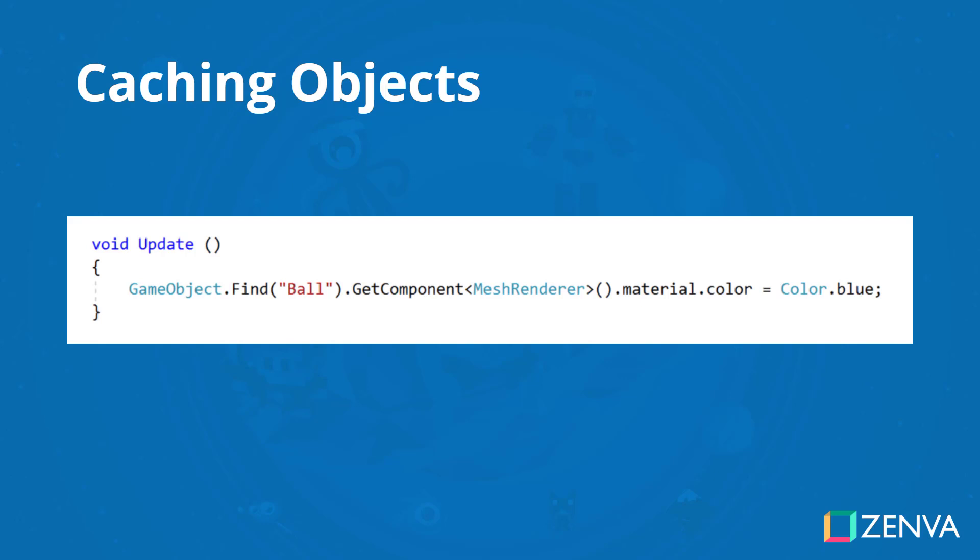This is a very expensive line of code, and when I say expensive, I mean that it is using a lot of processing power and it takes quite a long time to run in terms of a function. What we can do is actually cache the mesh renderer component of the ball, instead of having to find the ball every frame and find the mesh renderer component every frame.